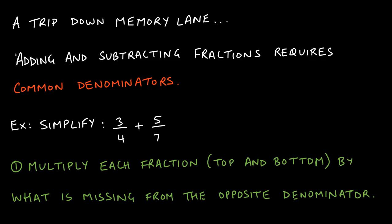Adding or subtracting fractions required common denominators. For example, with 3 over 4 plus 5 over 7 — the same thing that happens with numbers needs to be done with algebraic expressions. We do not have common denominators, so we have to multiply each fraction — top and bottom — by what's missing from the opposite denominator. This fraction is missing a 7; this fraction is missing a 4.